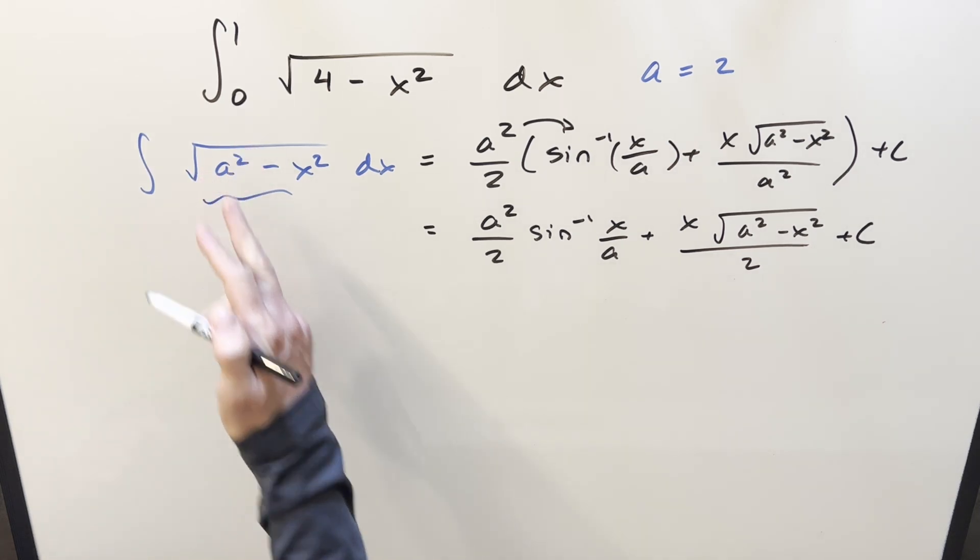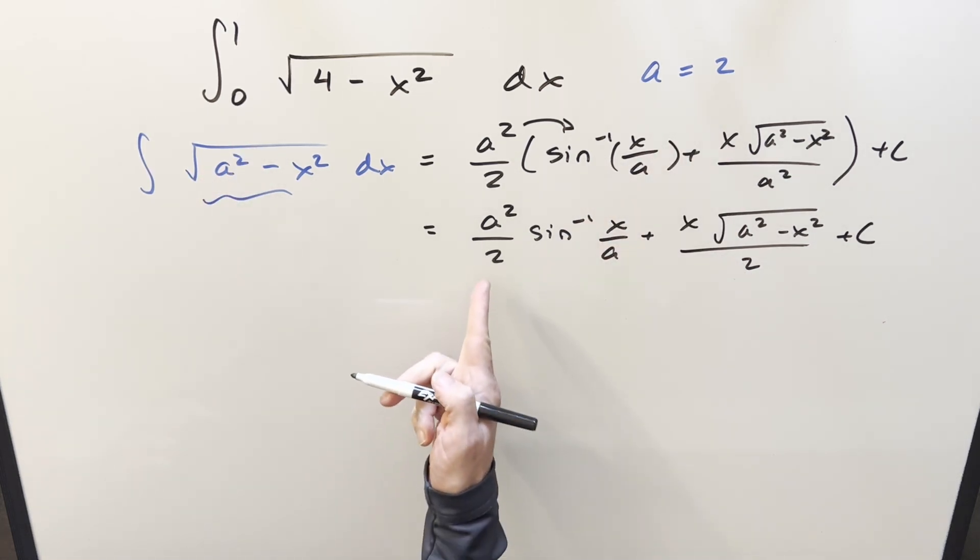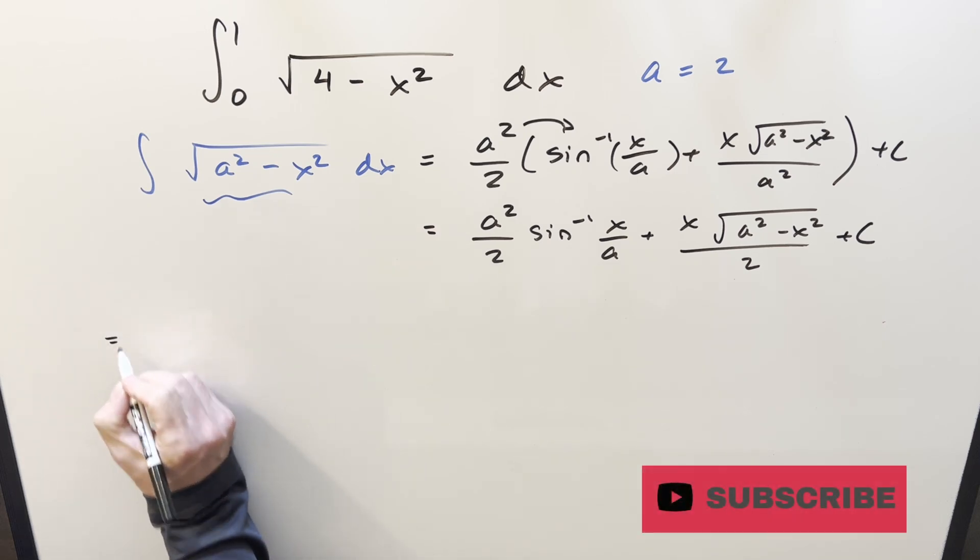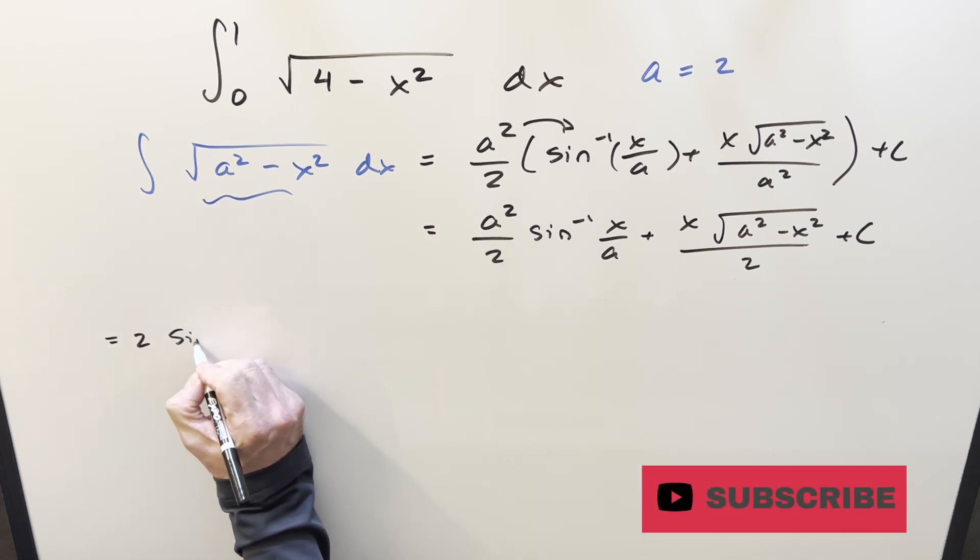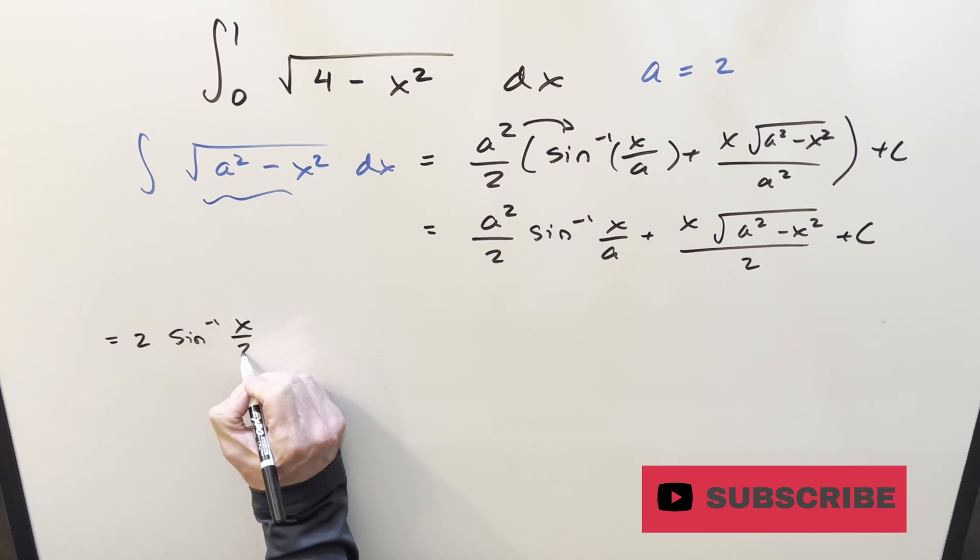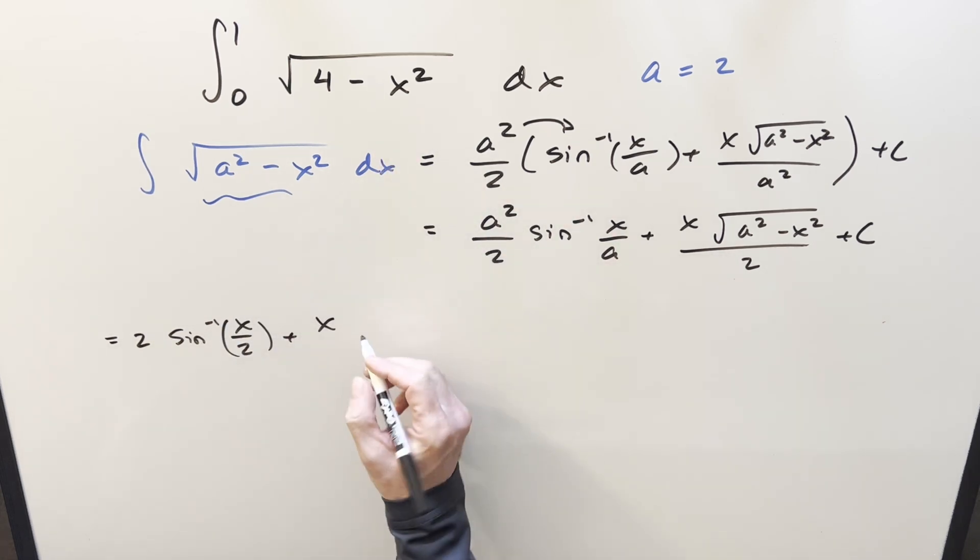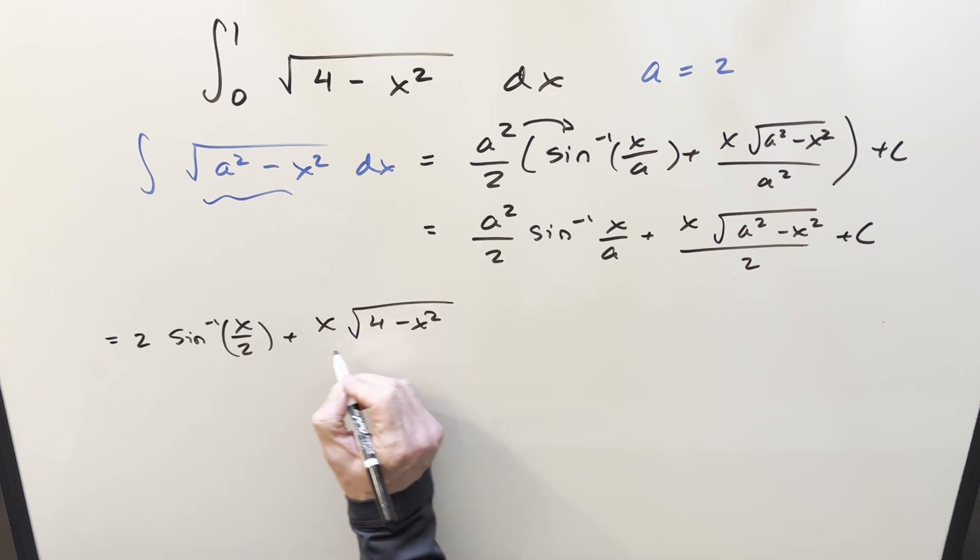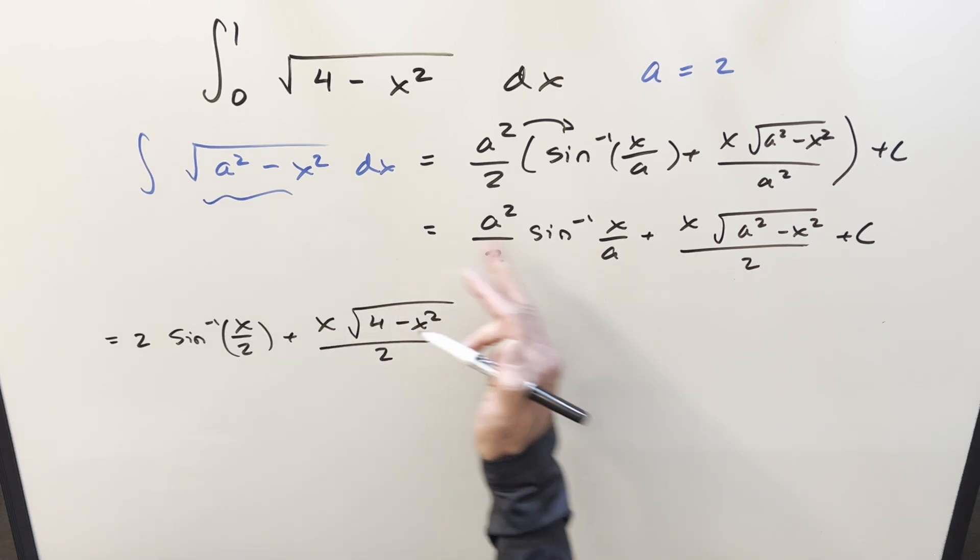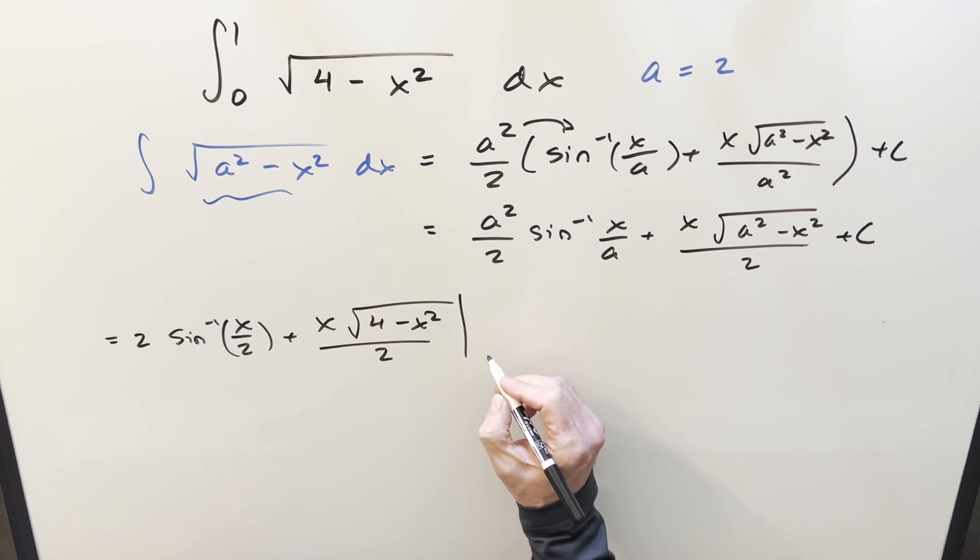So now getting back to our problem, we're going to have this, but we have a equal to 2, so when we plug, first we plug a 2 in there, we're going to have 4 over 2, so we're going to have 2 arcsine of x over 2, then plus square root a squared minus x squared, that's just going to become 4 minus x squared over 2. We don't want the plus c, now we're back to a definite integral, so we just need to evaluate this from 0 to 1.